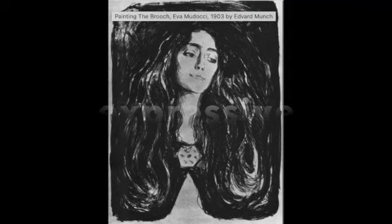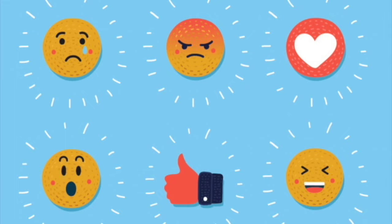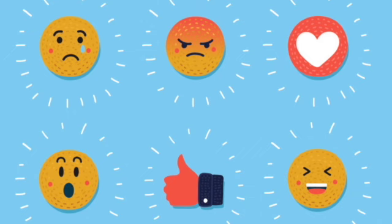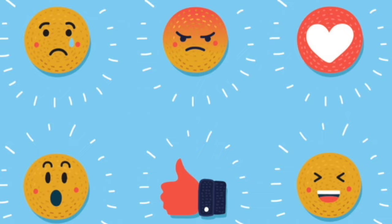Instead of painting exactly what he saw, Munch aimed to illustrate his emotions. He quickly decided to adopt a more expressive painting style. What kind of emotions did Edvard use to paint, and what kind of emotions do you think he painted after visiting Paris, France?